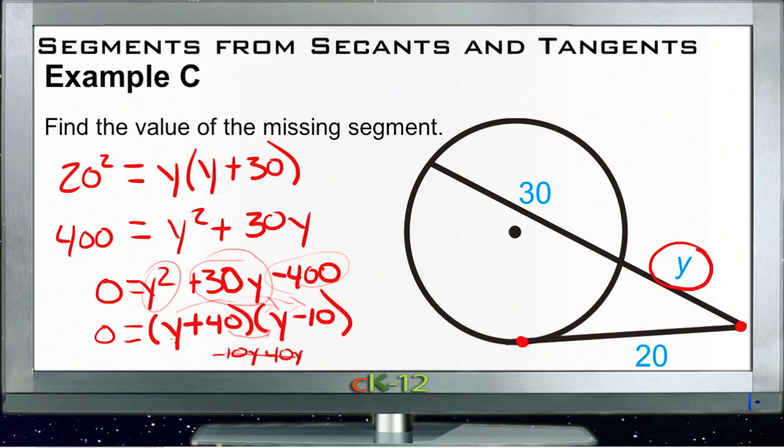So now we have 0 equals y plus 40 times y minus 10. So y would either be negative 40, because that would make this 0 and it wouldn't matter what this was, or y would be positive 10, because that would make this one 0 and then it wouldn't matter what this was. So y must be positive 10, since again our length can't be negative, so the negative 40 wouldn't possibly work. So there we go.